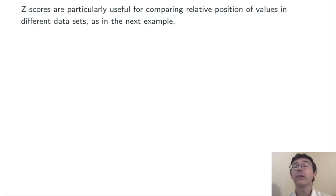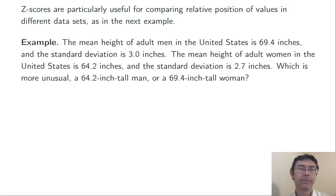Z-scores are particularly useful when we're comparing relative position of values in different data sets. Let's see an example. The mean height of adult men in the United States is 69.4 inches with standard deviation 3.0 inches. The mean height of adult women in the United States is 64.2 inches, and the standard deviation is 2.7 inches. Which is more unusual, a 64.2 inch tall man, or a 69.4 inch tall woman? So a woman with the average height of a man, and a man with the average height of a woman.